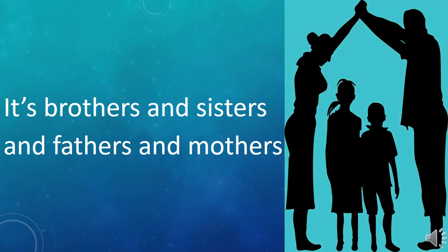Next we have: 'It's brothers and sisters and fathers and mothers.' These are a set of members — meaning a family. The poet says it is the family members like brothers, sisters, mothers, and fathers who together make a home.